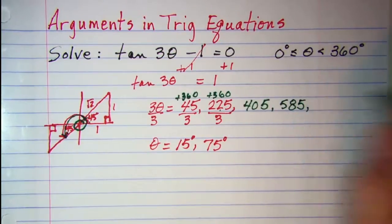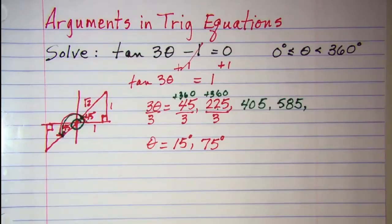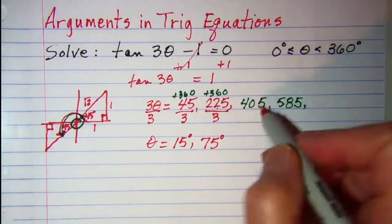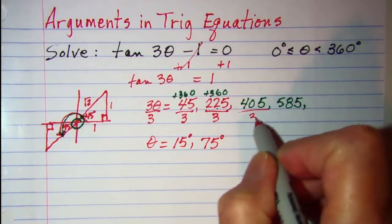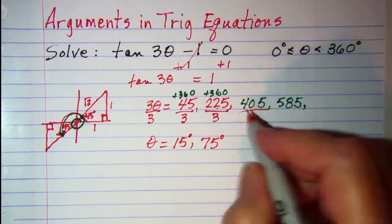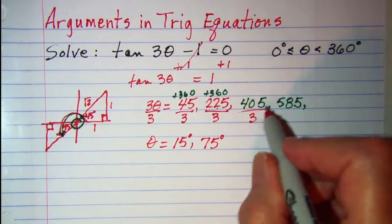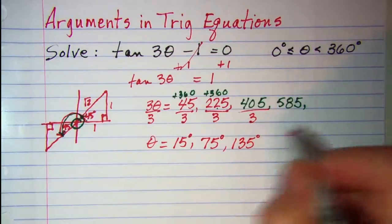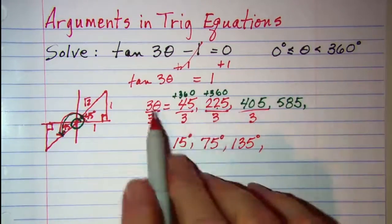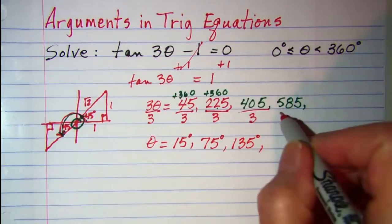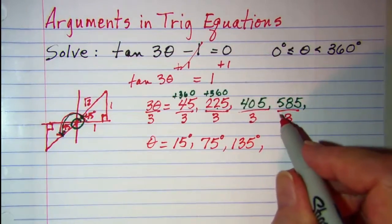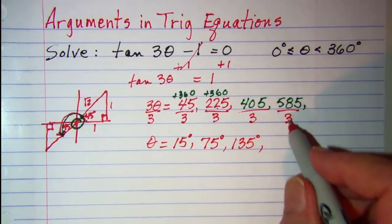And I'm going to put a comma because I may have to go bigger. Now when I divide both sides by 3 here, 3θ equals 405, dividing by 3, that gives me 135. And then 3θ equals 585, divide both sides by 3 there, I'll get 195.